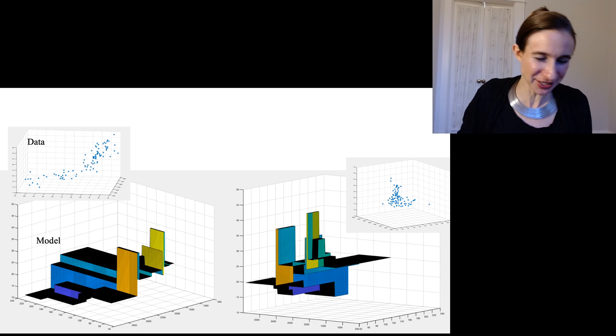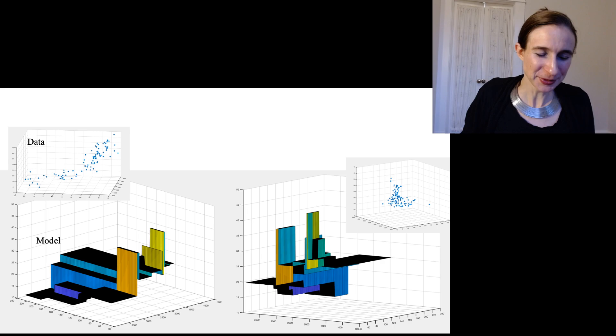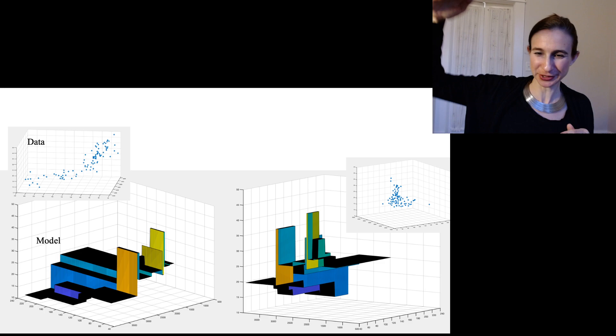So I visualized the data from two different angles and then I rotated the trees from two different angles. And the trees are piecewise constant, which is why you're seeing these sort of horizontal bars everywhere. That's actually the leaves of the tree that you're seeing there.